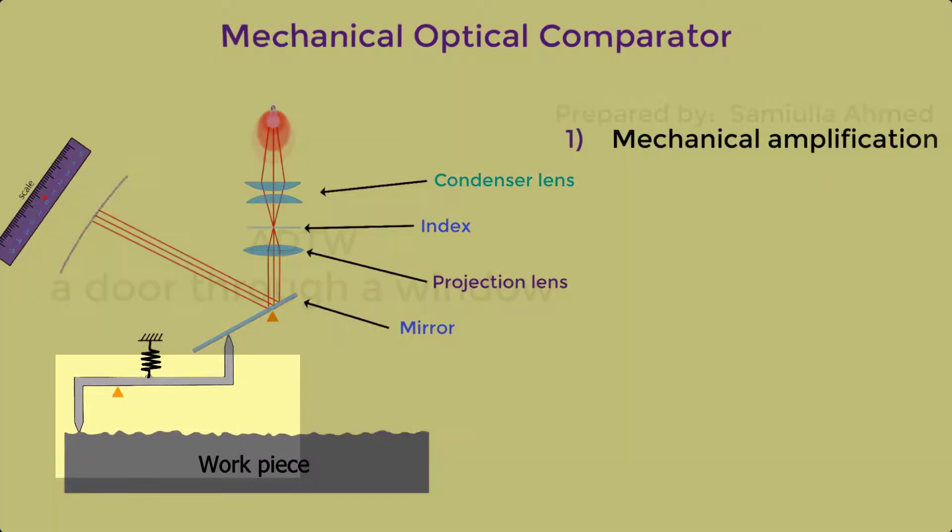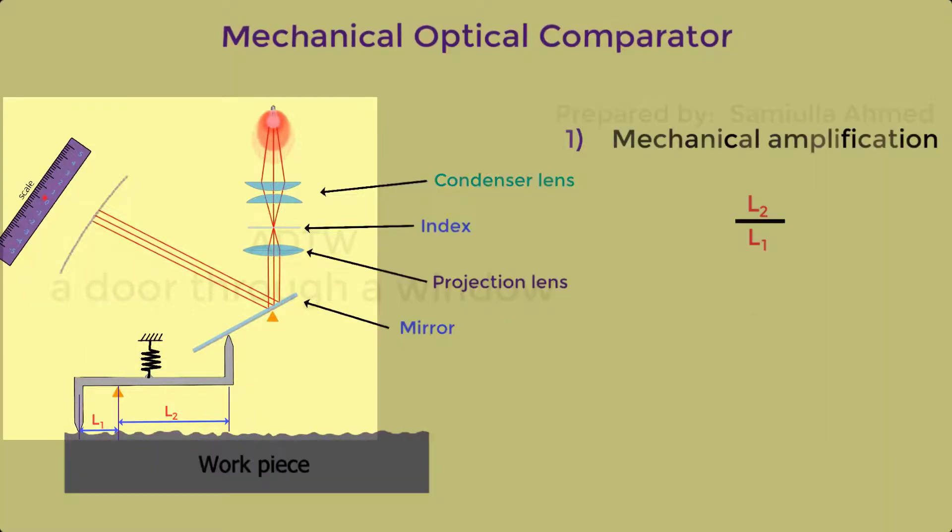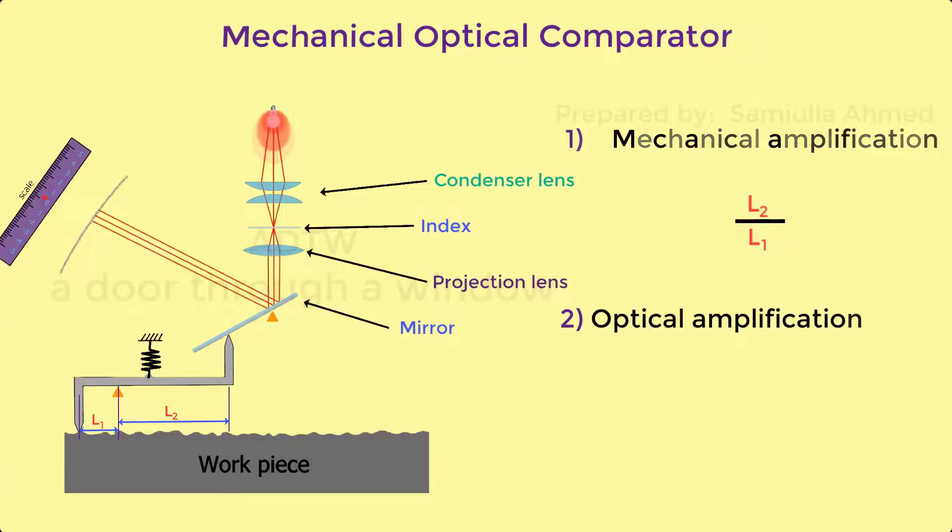First, mechanical amplification which is equal to L2 by L1. Second, optical amplification which is equal to 2L4 by L3. The multiplication factor 2 in the optical amplification is because if the mirror is tilted by theta, then the image is tilted by 2 theta over the scale.